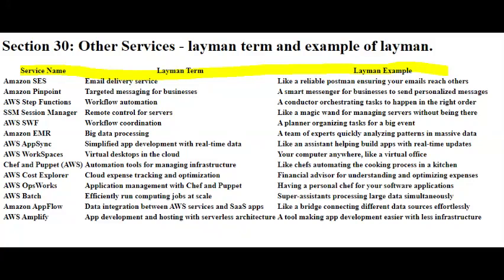AWS AppSync is like a smart connection manager for your applications. It helps them talk to each other, share data, and stay in sync, without you having to write a lot of complicated code.